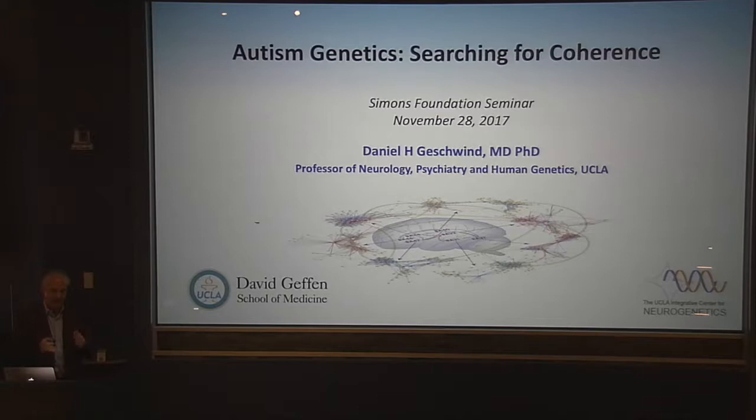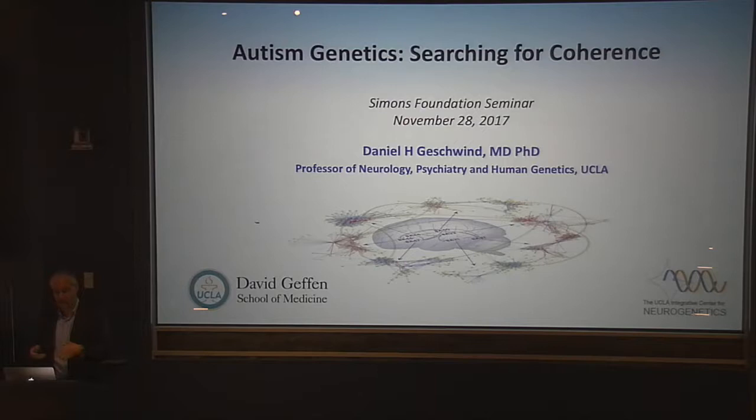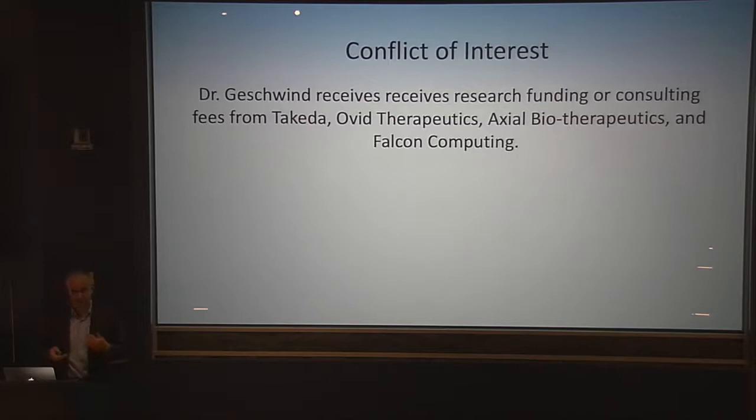My lab works at the level of finding genes and then trying to figure out how they cause disease. I'm not going to focus on the finding genes part — there are people who have been more successful than we have at finding genes in autism — but what I'll talk about is how we're trying to make sense of all that data, hence the title 'Searching for Coherence.'